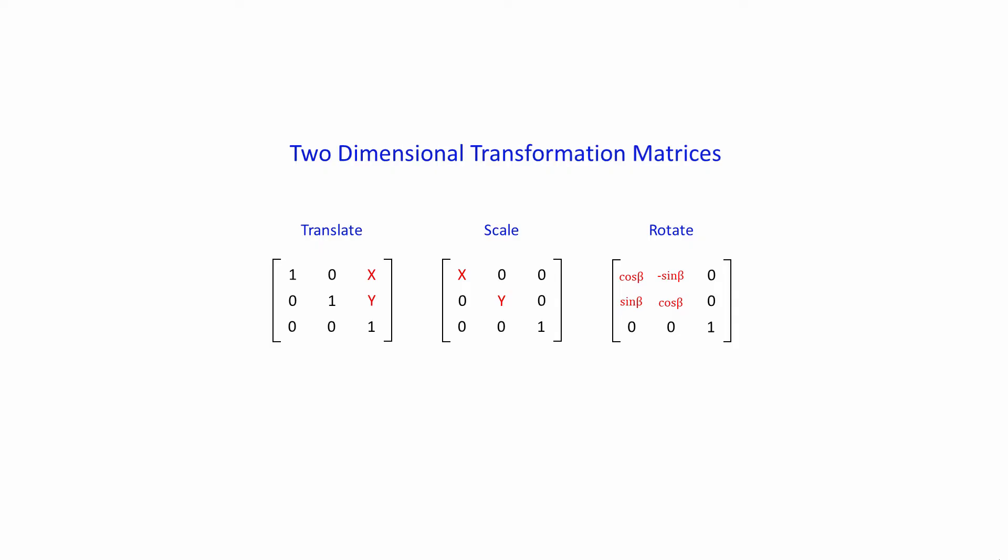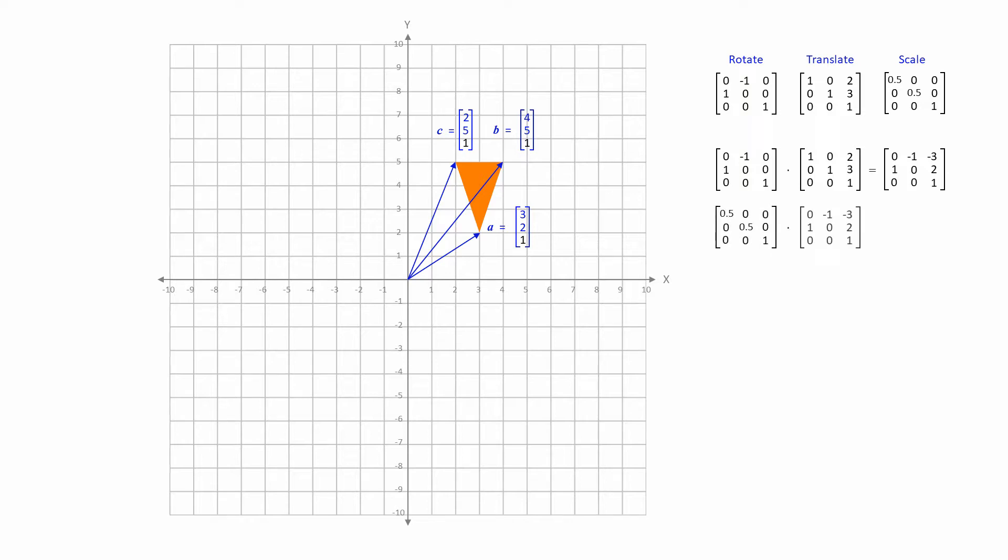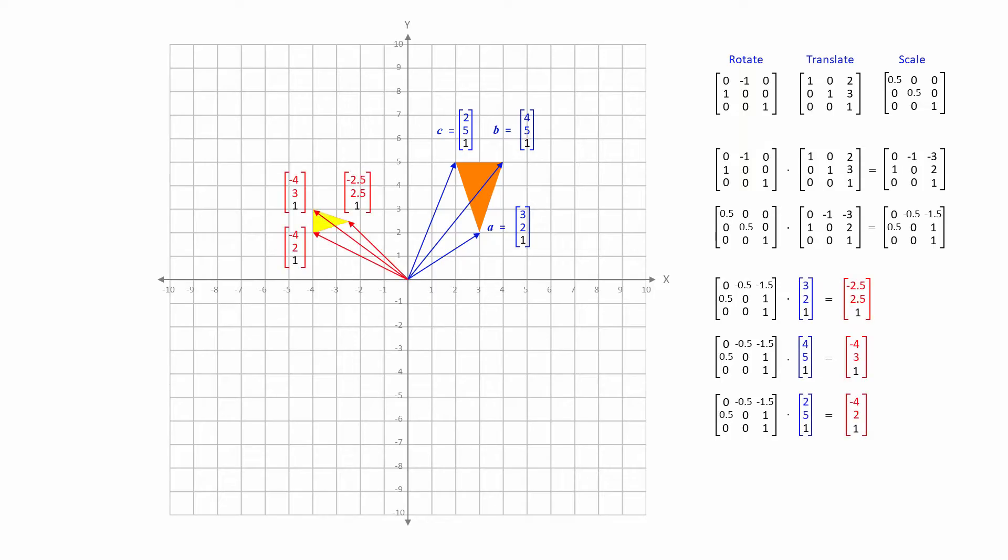Multiplying a 3 by 3 transformation matrix by a vector in two-dimensional space requires that the vector has a third component, the number 1, so that the rules of matrix multiplication can be obeyed. Once the desired transformation matrix has been composed by multiplying individual transformation matrices together, it can be applied to each and every vertex in the model simultaneously.